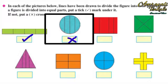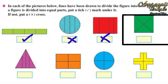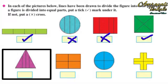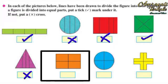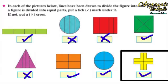See in the next picture — this figure is also not divided into equal parts, so we will put a cross. See in the next picture — this figure is divided into four equal parts, so we put a tick mark. The next figure is not divided into equal parts, so we put a cross. The next figure is divided into equal parts, so we put a tick mark. The following two figures are also divided into equal parts, so we put tick marks.